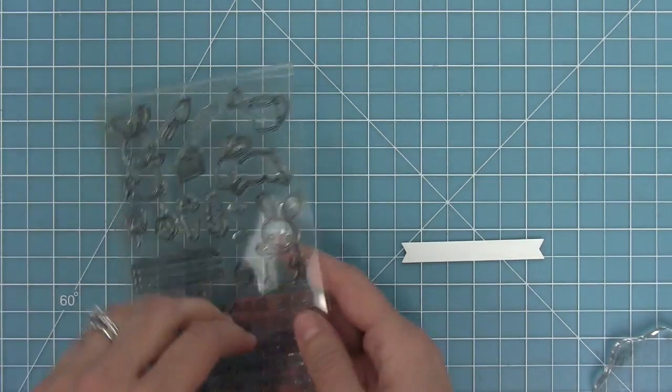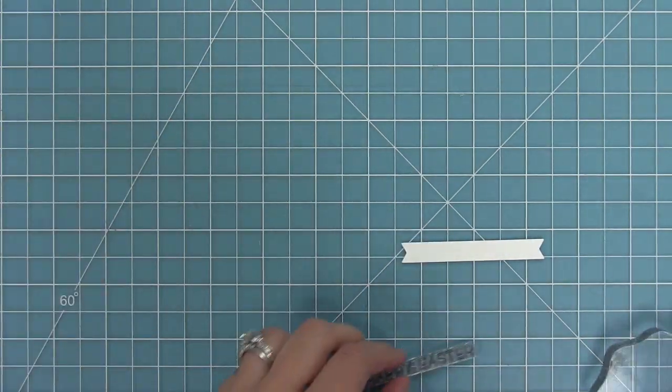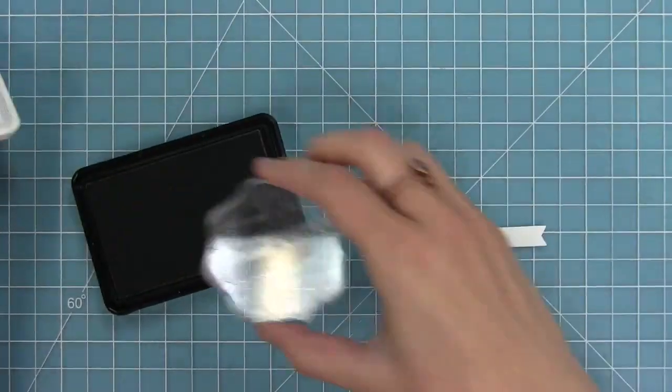So I'm using a sentiment banner and I'm going to die cut some white cardstock and then I'm going to take the happy easter sentiment from the sun bunny stamp set and I'm going to stamp that in some walnut ink onto that little banner.